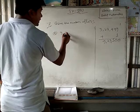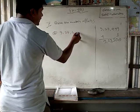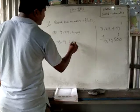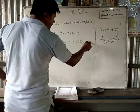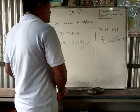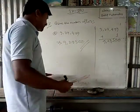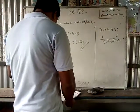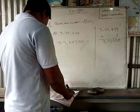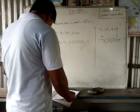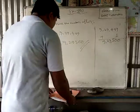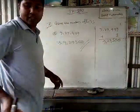9,29,499 — the answer will be 9,29,500. This is the answer. Like this you have to do. So these are very easy. Next is coming — international system — so about that I will teach you afterwards. So here I am going to conclude my class. Thank you.